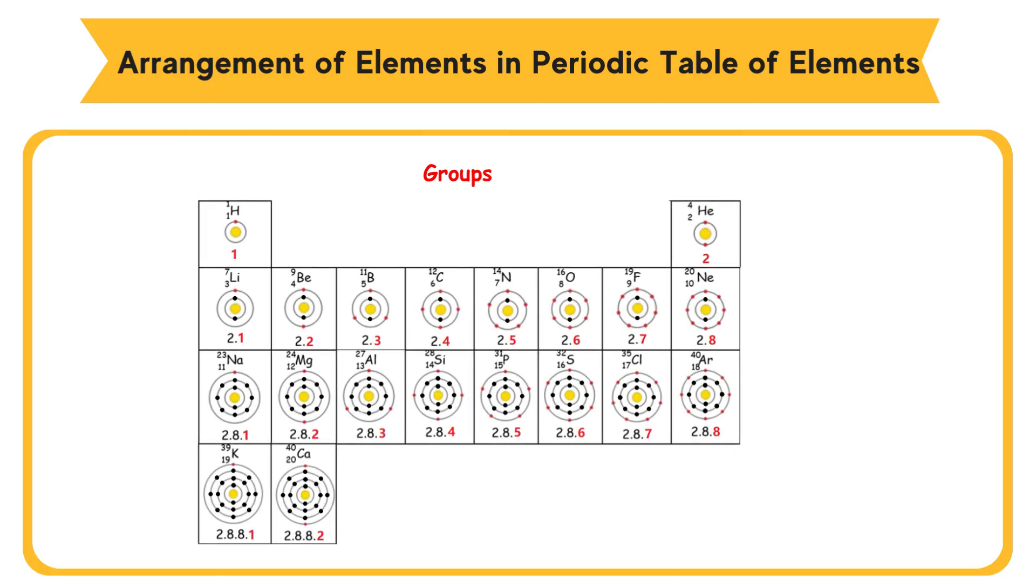The relationship between electron arrangement of the first 20 elements and their positions in the periodic table of elements. The group number of an element is determined by the number of valence electrons in an atom. For the elements with 1 or 2 valence electrons, group number equals number of valence electrons. For the elements with 3 to 8 valence electrons, group number equals number of valence electrons plus 10.